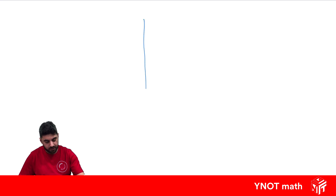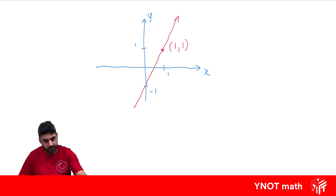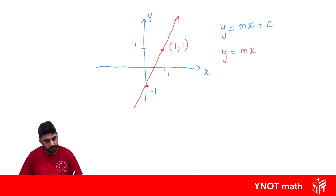What if we were given just the graph of the line, not the equation? How can we get the equation? So let's say we have this line where we know it's going through minus 1 on the y-axis, and it also goes through the point (1, 1). Remember, any straight line has the equation y equals mx plus c, where m is the gradient and c is the y-intercept. Straight away we can see the y-intercept is minus 1, so we know we're going to have something x minus 1.